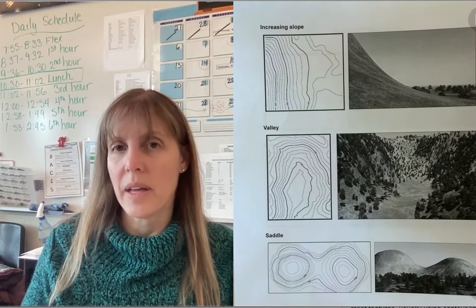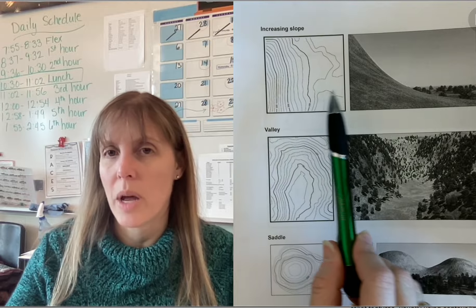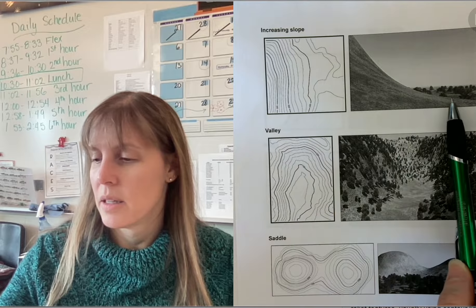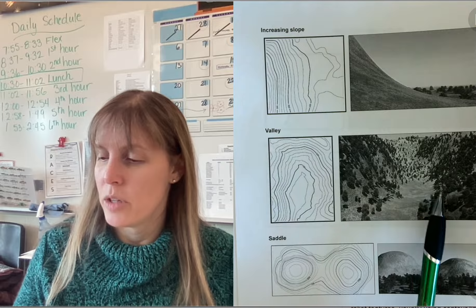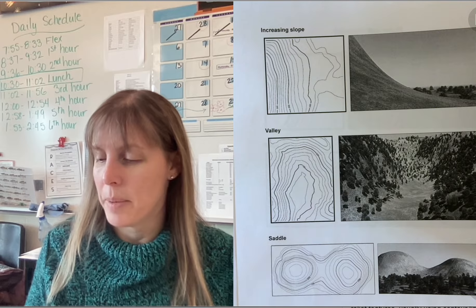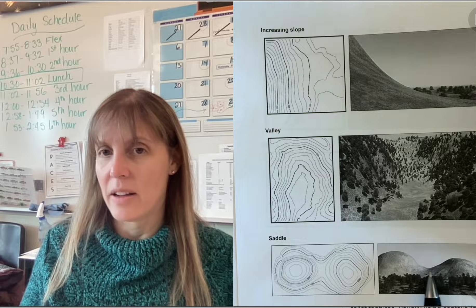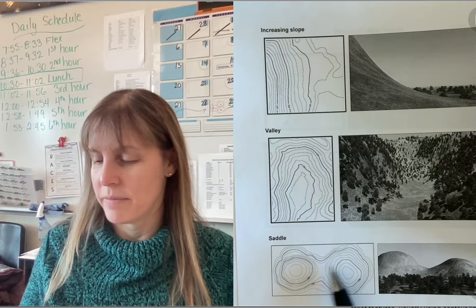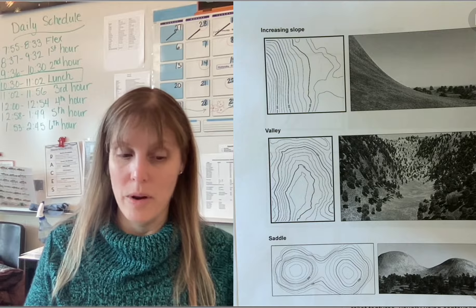You might want to do something to show an increasing slope. You see this is this. You might want to do a valley. So here's a picture of a valley and here's what it actually looks like on a map. Here's a saddle and here's what it actually looks like from the top when you use a map. There's a lot of cutting for that one.